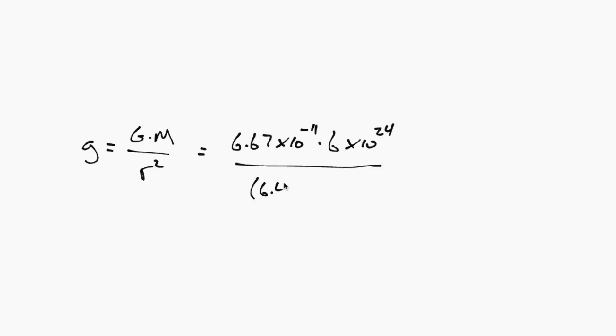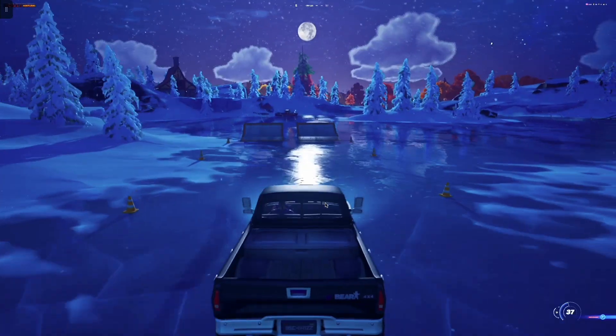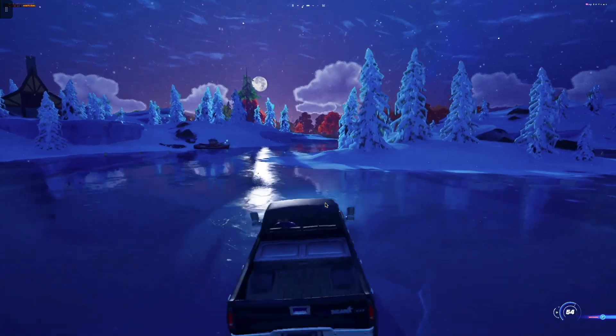On Earth, G is 9.8 meters per second squared. You can actually calculate that just from the radius and mass of the Earth, because that value of G is how much gravity we feel right here on the surface. But any planet or moon can have a different value of G, and in a virtual world we can choose basically any value we want. We have to weigh factors like how high a player can jump, how long they're in the air, and how far a car goes off a ramp. So what we're going to do is measure G inside Fortnite and try to understand why the designers chose that value.